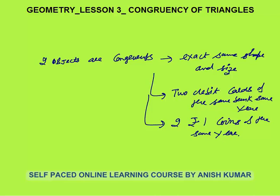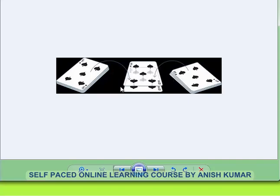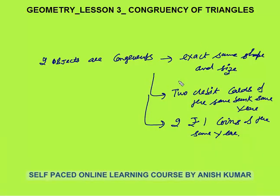Let me show you photographs of congruent objects — exact same shape and size, they will overlap each other. You can see playing cards of exact same shape and size. These coins in the picture are congruent to each other because they are of exact same shape and size. So two objects are congruent when they are of exact same shape and size. The same is true for triangles.